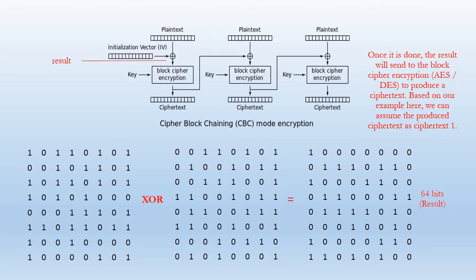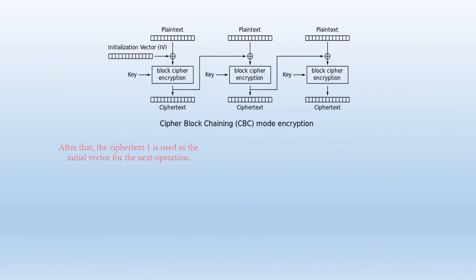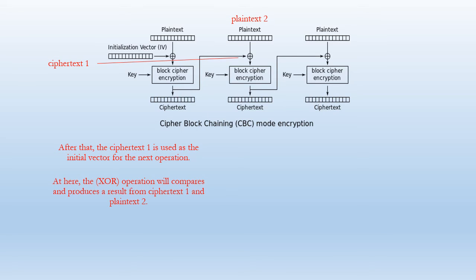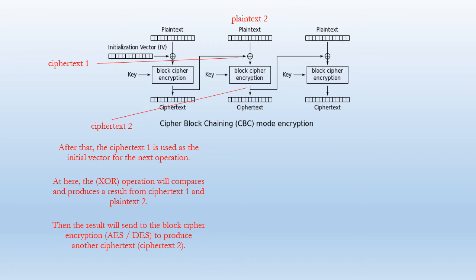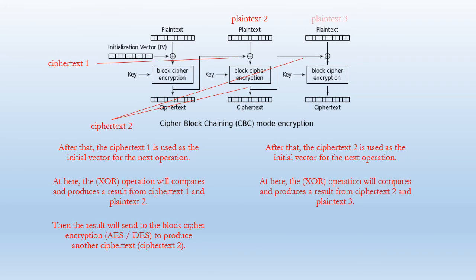Based on our example, we can assume the produced cipher text is cipher text 1. After that, cipher text 1 is used as the initialization vector for the next operation. The XOR operation then compares and produces a result from cipher text 1 and plain text 2. This flow continues until all plain texts have been encrypted into cipher text.